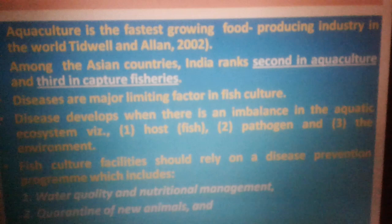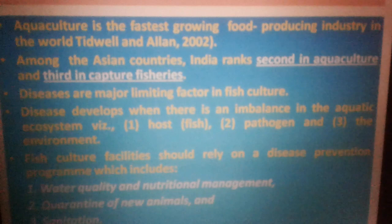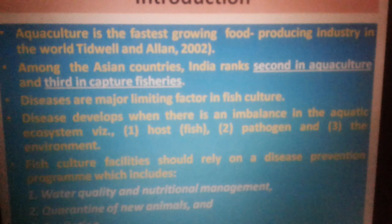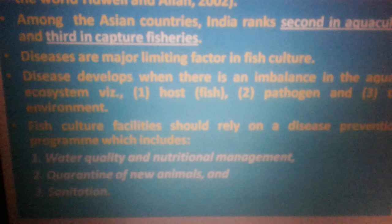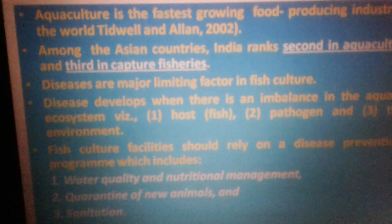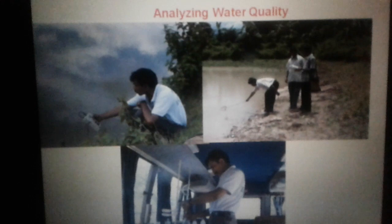The diseases of fish in the pond culture system mainly arise due to the imbalance of three factors: the host, the fish pathogens, and the environment. We can control this by water quality and nutritional management, quarantine of new animals, and sanitation.